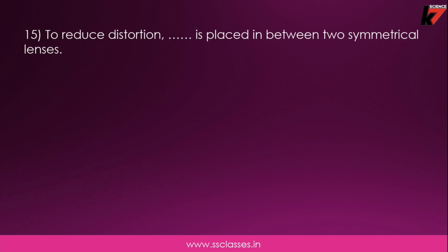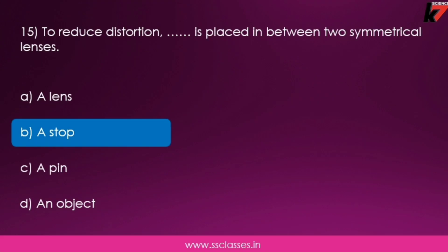Fifteenth question: to reduce distortion, which is placed in between two symmetrical lenses — a lens, a stop, a pin, or an object? The correct answer is a stop. A stop is placed in between two symmetrical lenses to reduce distortion.